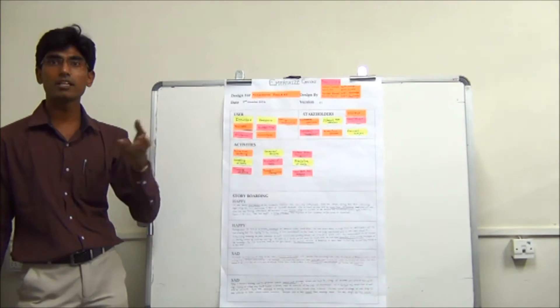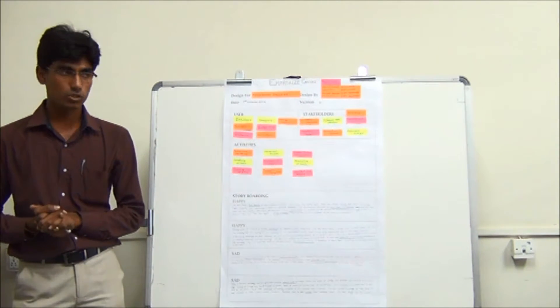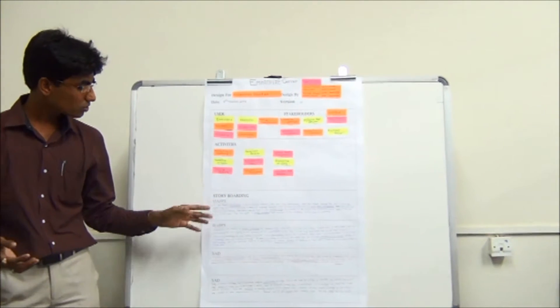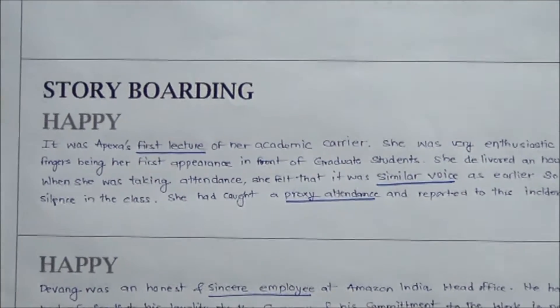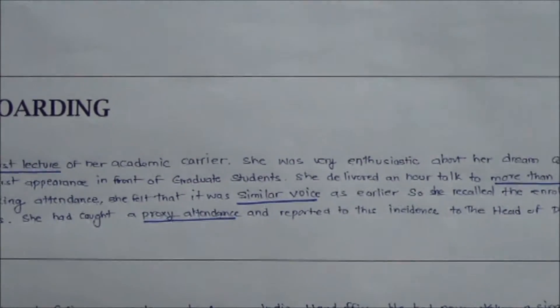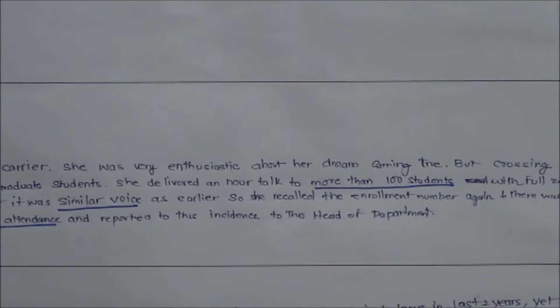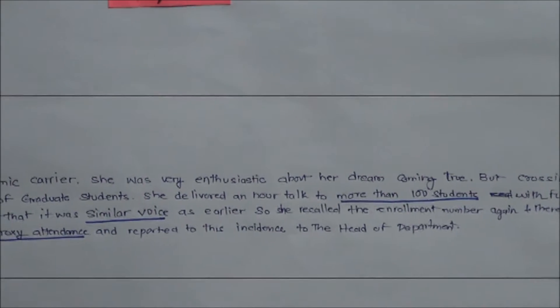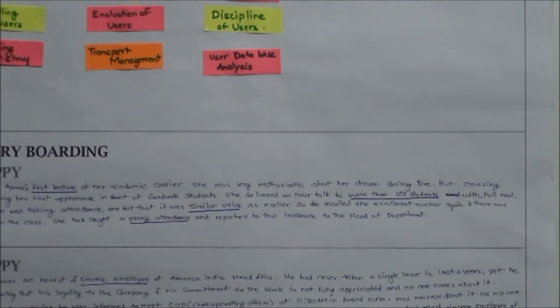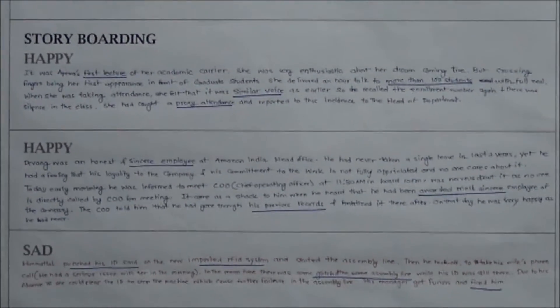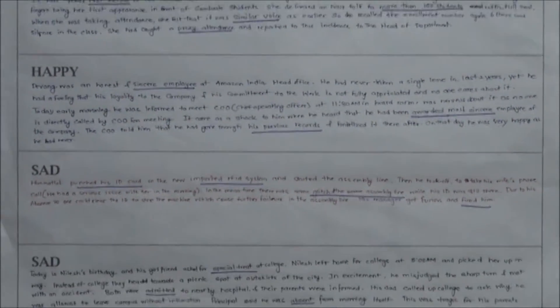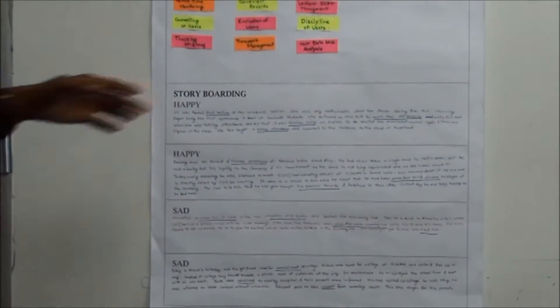Based on these users, stakeholders and activities, we can write two happy stories and two sad stories. For example, the first happy story considers a girl who is going to deliver her first lecture in a class of 100 students. Due to this attendance system, she found that one person is already absent but their friend is giving proxy attendance. By using this attendance process, she identified the proxy student.